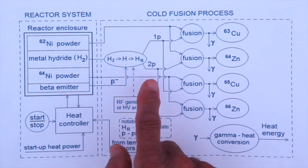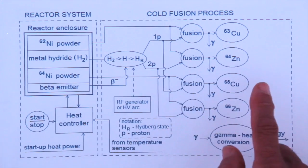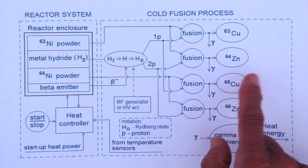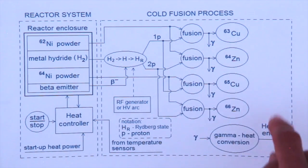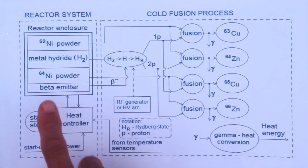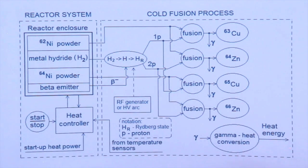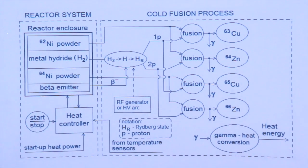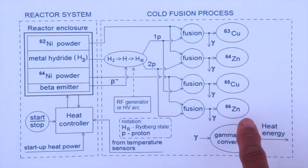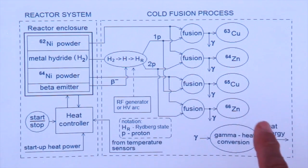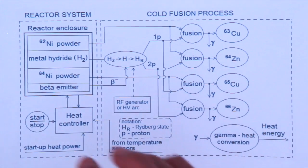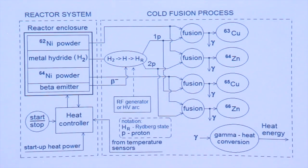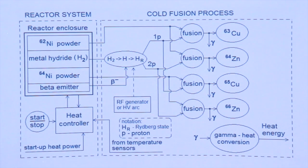If two protons are attached, we get zinc-64, and also from another isotope, zinc-66. In this case all the output elements are stable, so with this selection of isotopes we should not have radioactive waste.